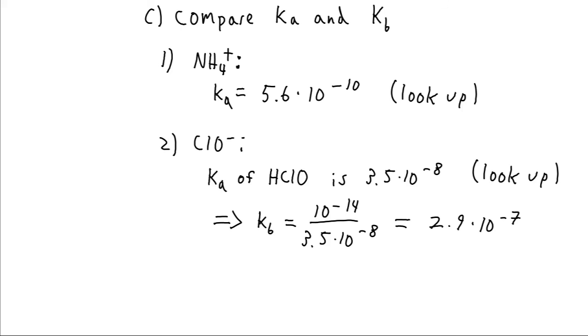And the Ka of that is 3.5 times 10 to the minus 8. We can use that to find the Kb of its conjugate, the ClO-minus. So Ka times Kb equals K water. So our Kb is going to be K water divided by the Ka of the conjugate. That gives us 2.9 times 10 to the minus 7 as our Kb for the hypochlorite.